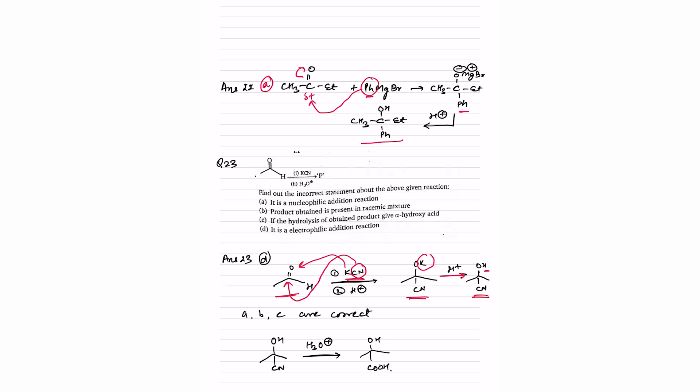Now identify the incorrect statements. Statement A: it is a nucleophilic addition reaction — correct. Statement B: product is present as a racemic mixture — correct, since attack can happen from either face with no stereochemical specificity. Statement C: hydrolysis of the product gives the alpha-hydroxy acid — correct, H3O+ gives OH and COOH. Statement D: it is an electrophilic addition reaction — incorrect. So the incorrect answer is option D.